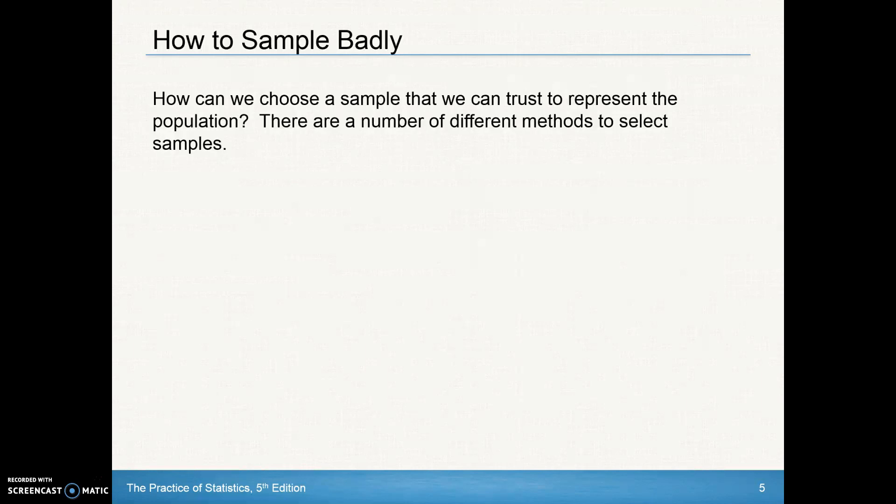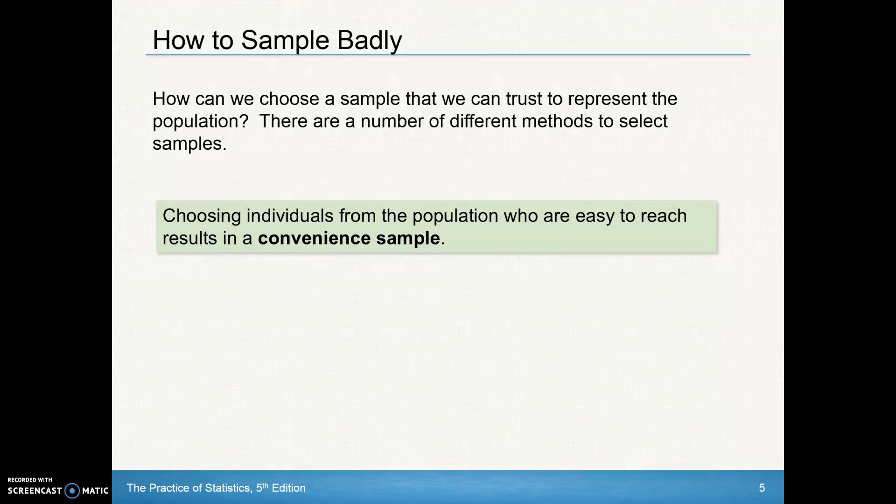There are a number of different methods to select samples. One of the bad ways is to choose individuals from a population who are easy to reach. That is what's called a convenience sample. That would just be me standing out in front of a grocery store and asking people's opinions about a certain topic. It's just convenient. Or maybe just asking the class what their opinions are.